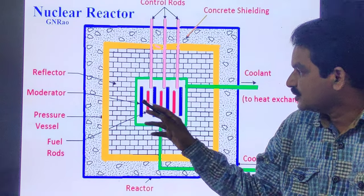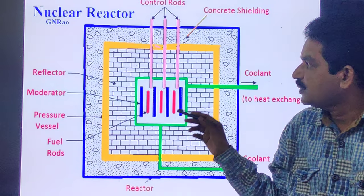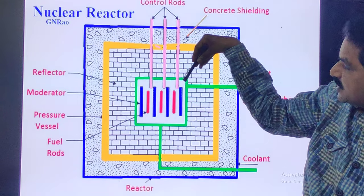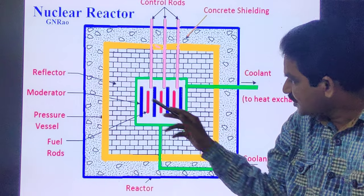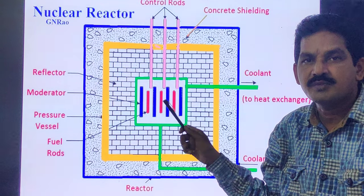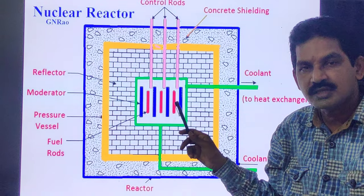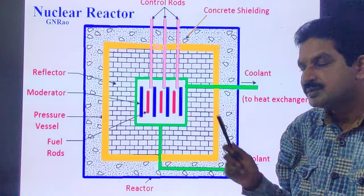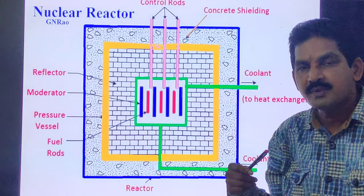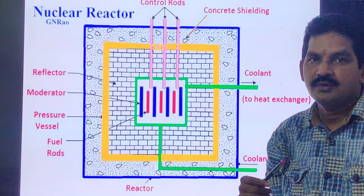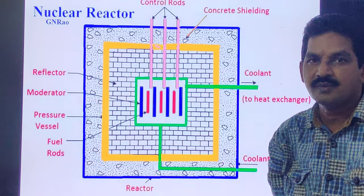Control rods are used to control the reaction to prevent it from becoming violent. They control the reaction by absorbing the neutrons. These rods are made of boron and cadmium. Whenever the reaction needs to be stopped, the reactors are fully inserted and placed against the set iron. When the reaction is to be started, rods are pulled out.